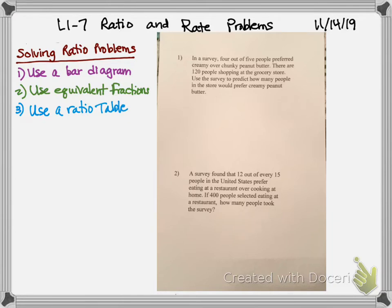So let's look at how I would do each of these. So it says four out of five people prefer creamy over chunky peanut butter. And there are 120 people shopping in the grocery store. Use the survey to predict how many people in the store would prefer creamy peanut butter. So let's start with a bar diagram.